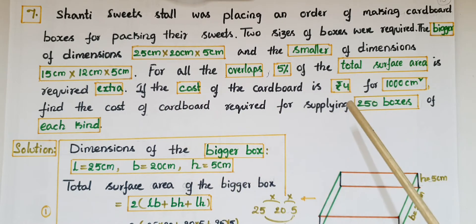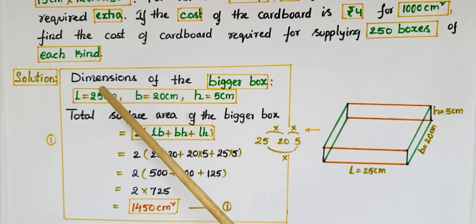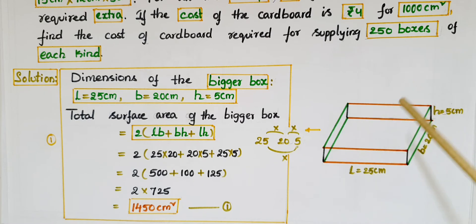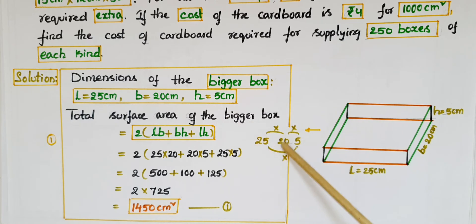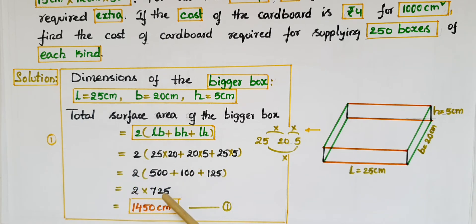First, we find the cardboard required for the bigger box. The dimensions are l = 25 cm, b = 20 cm, h = 5 cm. Total surface area = 2(lb + bh + lh) = 2(25×20 + 20×5 + 25×5) = 2(500 + 100 + 125) = 2 × 725 = 1450 cm². This is the first equation.